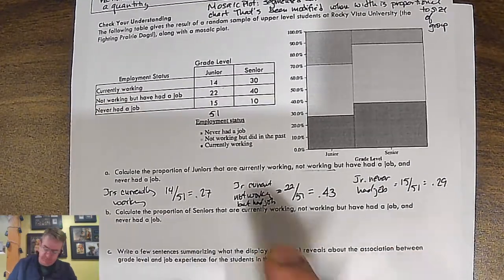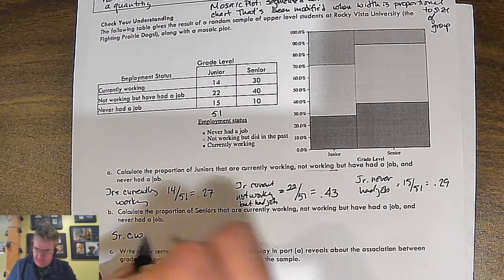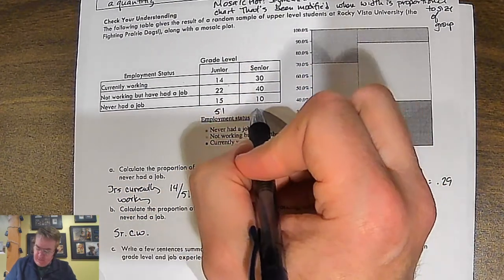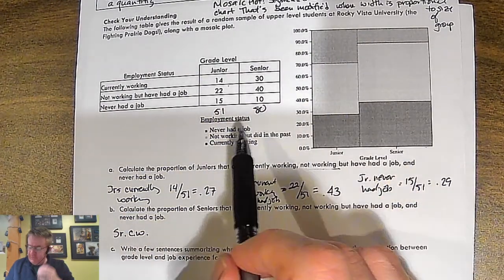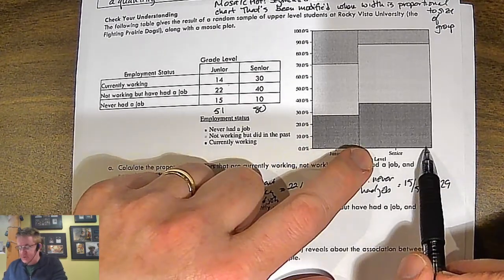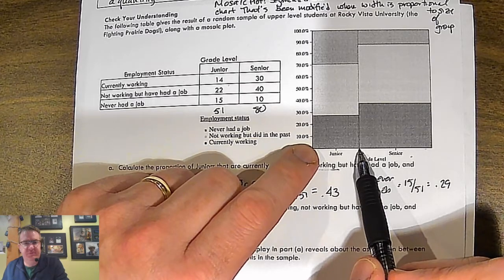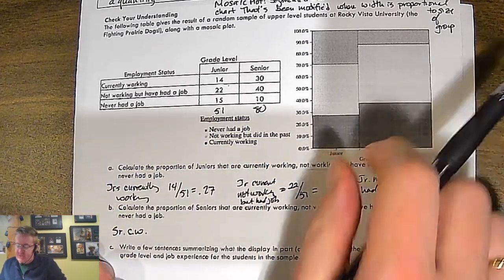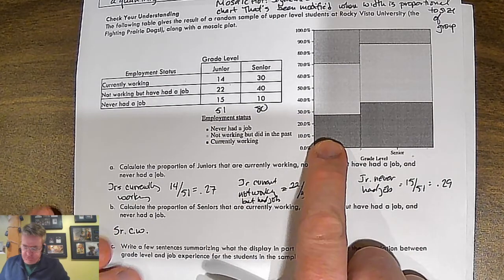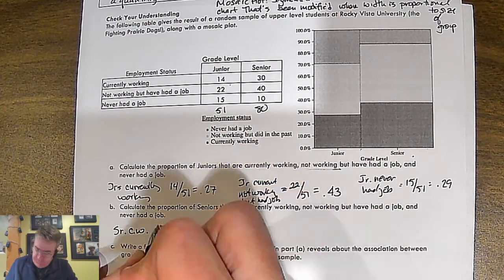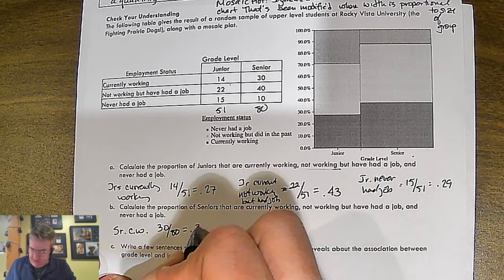Same thing for the seniors. Seniors currently working. Now, here we've got 80. And that's part of the reason why this is bigger. Because notice here, if this is 50, this is going to be about one and a half times as big as that. Because one and a half of 50 is going to be 75. So, it's going to be about that much wider. But even here, you can tell there's more seniors that were represented than there were juniors. So, seniors that currently work, 30 out of 80.